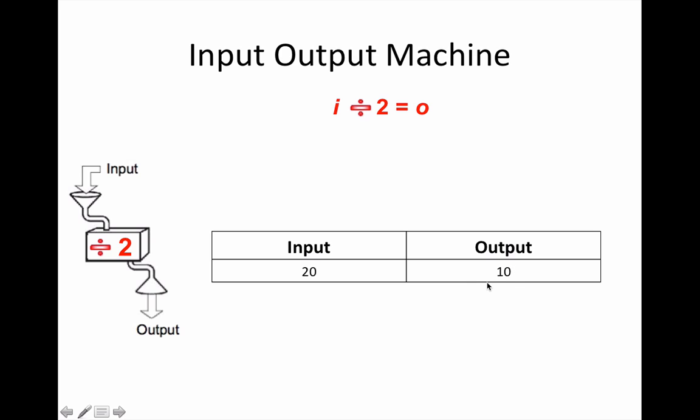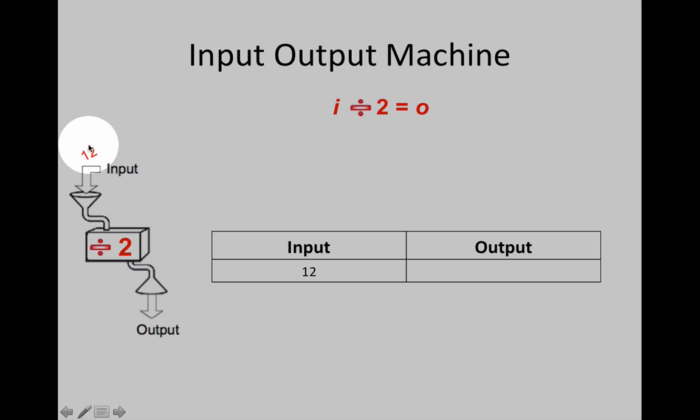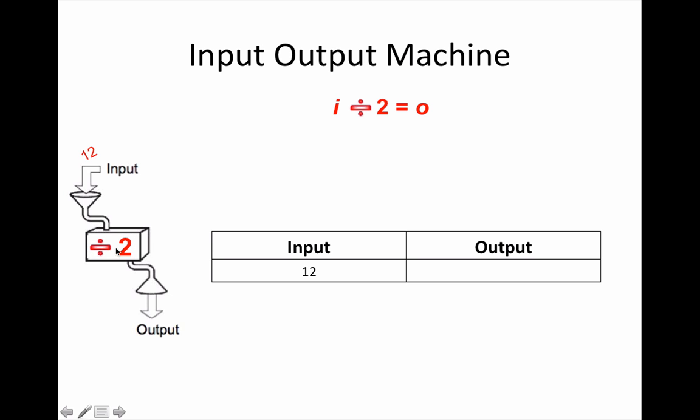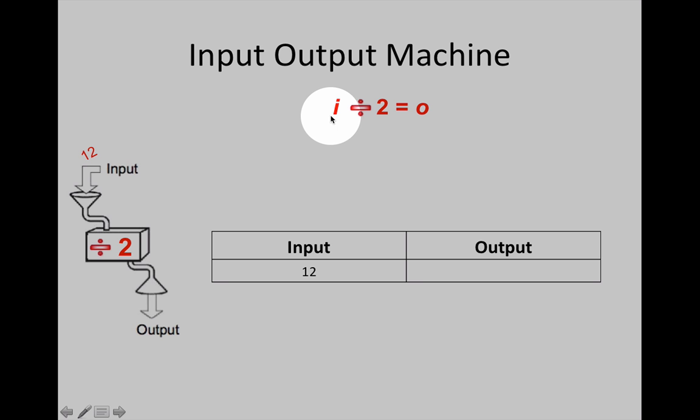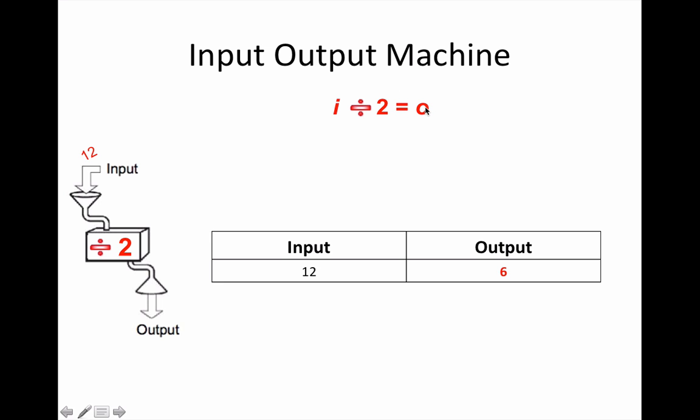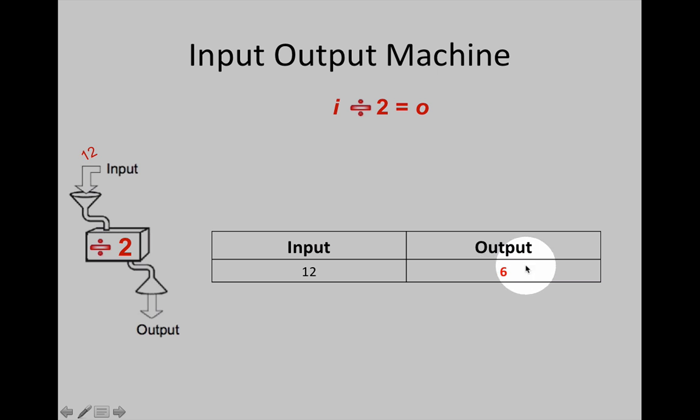Let's try some other numbers in this machine. Let's share 12 marbles between two siblings. How many marbles would each of the siblings get? 12 is the input divided by 2 equals the output. 6 is the output.